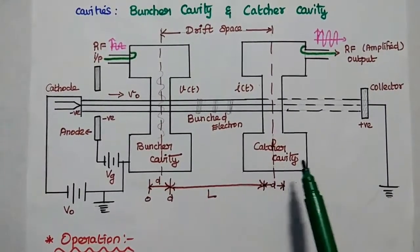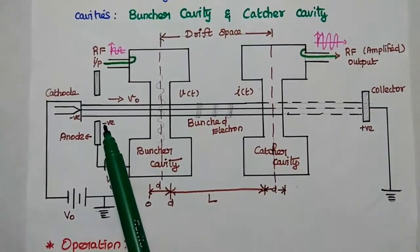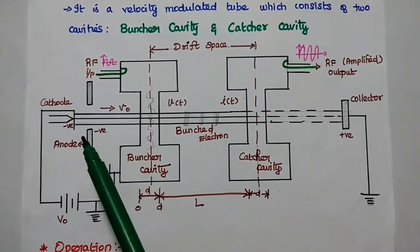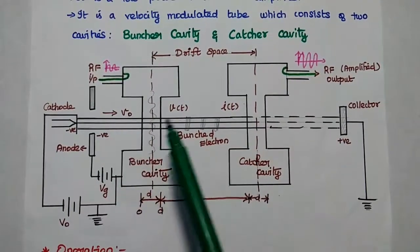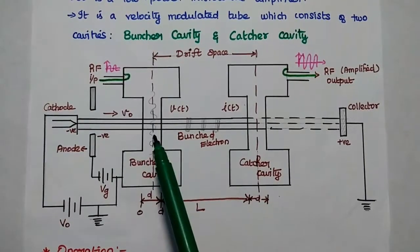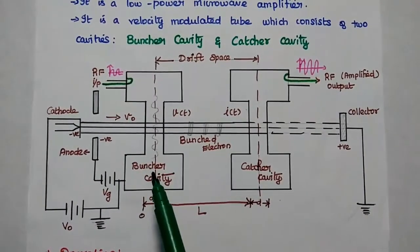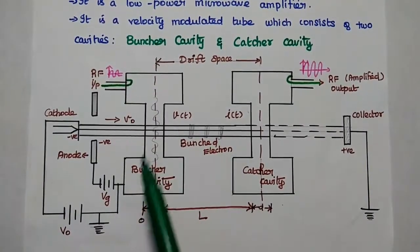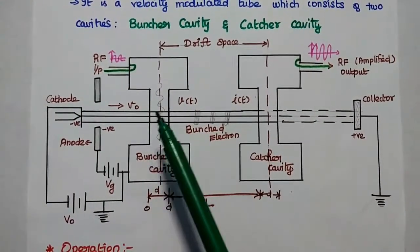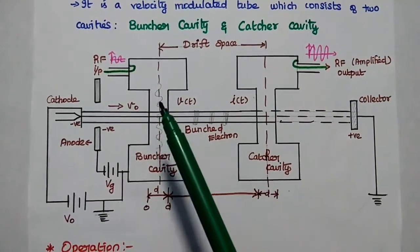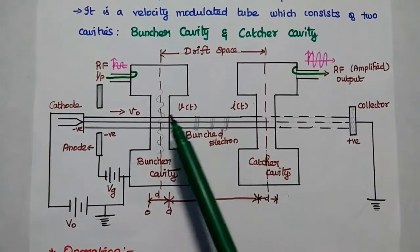Now we will discuss the working principle of the klystron amplifier. The electron gun emits an electron beam that travels through the tube. When the electron beam reaches the accelerating anode, it produces a high-velocity electron beam towards the buncher cavity. The bunching process is done using the buncher cavity, where we apply the RF input signal — a sinusoidal signal. Electrons crossing the positive half cycle of this RF signal will be accelerated, meaning their velocity is increased.